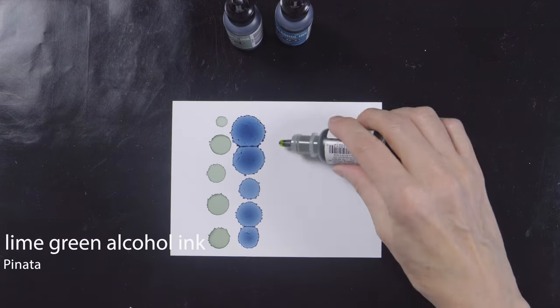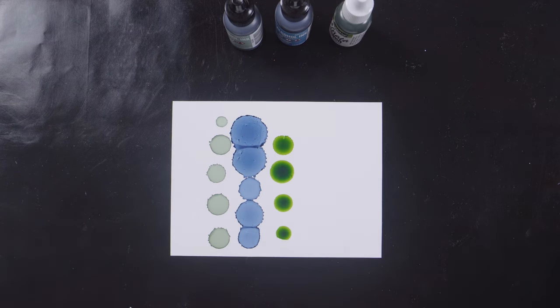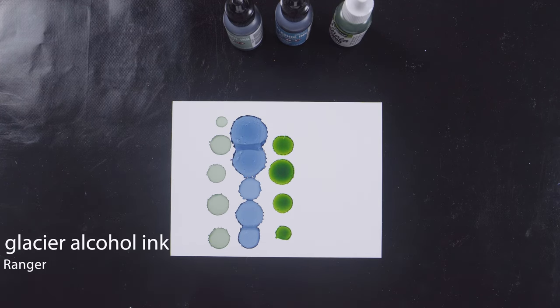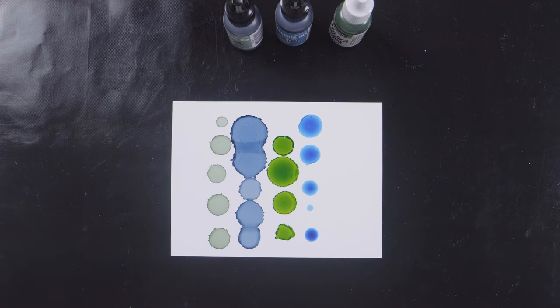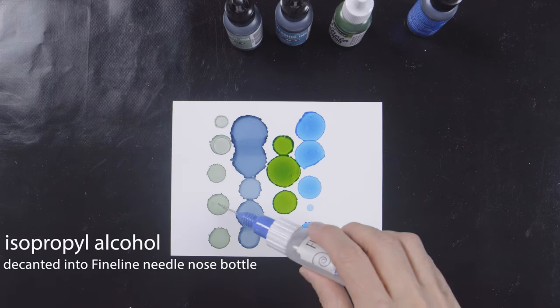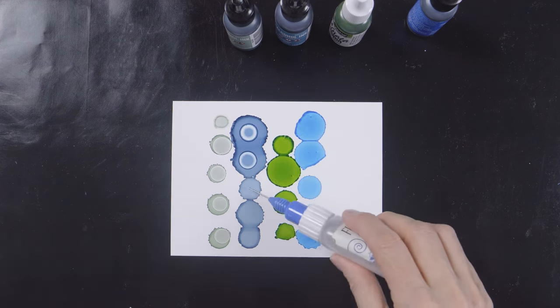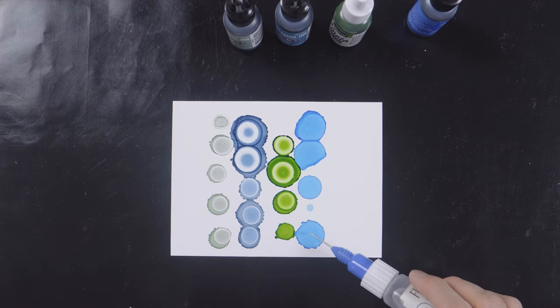I'm working with three Ranger inks and one Pinata lime green, finishing off my dots here with Glacier alcohol ink from Ranger, and then moving the inks around with isopropyl alcohol. I usually use 99% if I can find it—I think this one's 91%—but you want a high percentage rather than 70%.